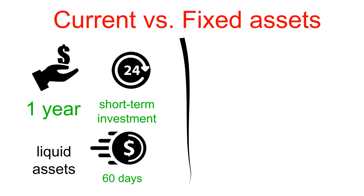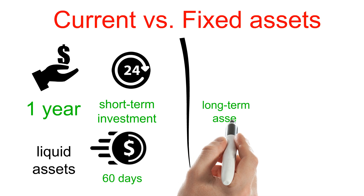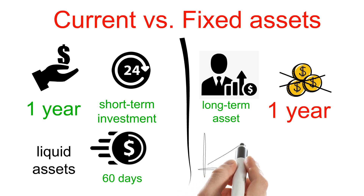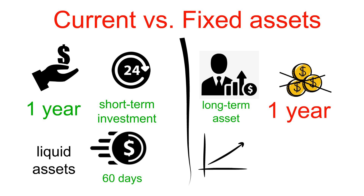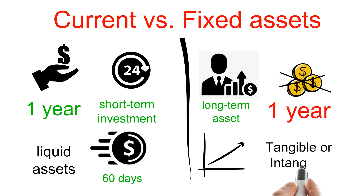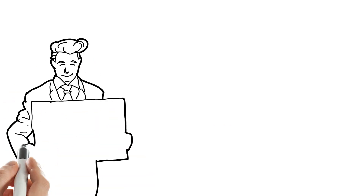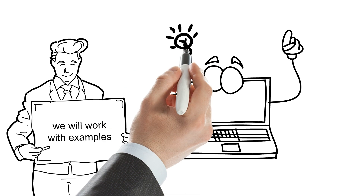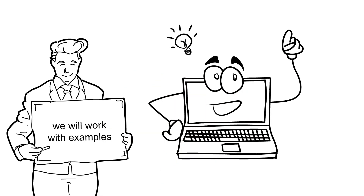A fixed asset, or non-current asset, is a long-term asset that continually brings value to your business after one year. You can't convert fixed assets into cash within one year. Fixed assets help bring long-term value to your company as you grow, and because they are long-term assets, they typically depreciate in value over time. Fixed assets can be tangible or intangible. Examples include cars, land, buildings, and machinery. Don't worry about memorizing these — work through examples and you'll get good at recognizing them. There are also many web resources to reference asset and liability categories.